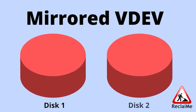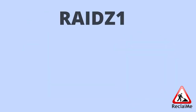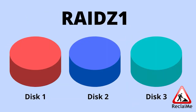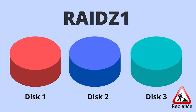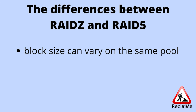Mirror pool is like a RAID1, in which metadata and user data are stored in copies. RAIDZ1 pool is similar to a RAID5, where a parity function is calculated over the data blocks. However, there are significant differences between RAIDZ and RAID5.